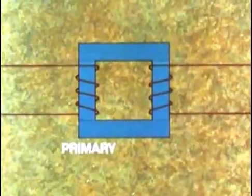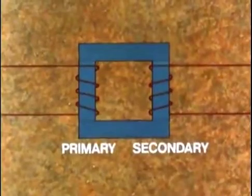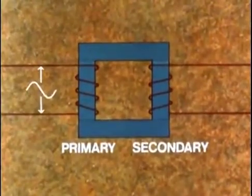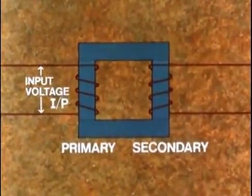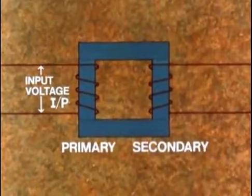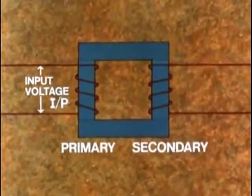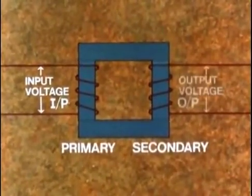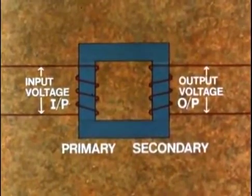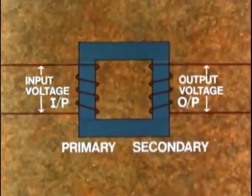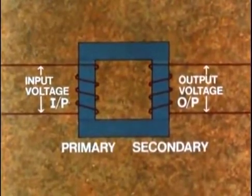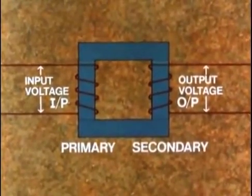We call the first coil the primary coil and the other one the secondary coil. The alternating voltage applied to the primary coil is the input voltage, IP. And the alternating voltage produced in the secondary is output voltage, OP. But before we can understand how this arrangement actually transforms the voltage, we need to know something else about induced currents.